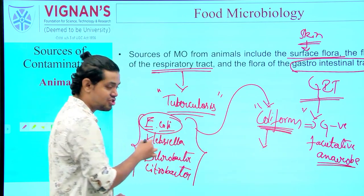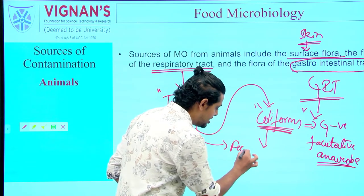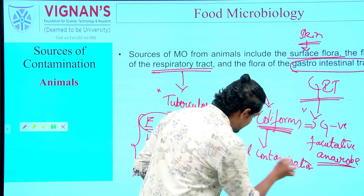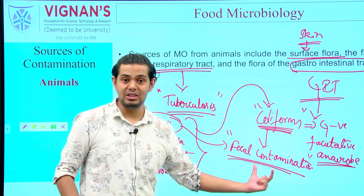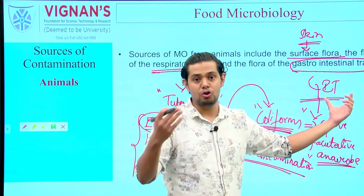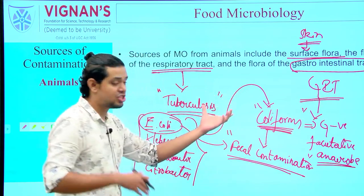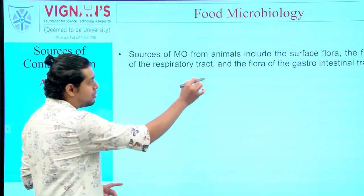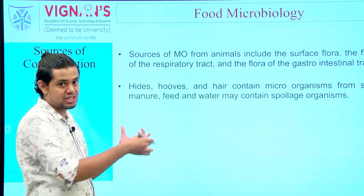Of the coliform group, the most important is Escherichia coli, because its presence in any food matrix indicates fecal contamination — meaning the product has been contaminated with feces. Besides coliforms, the GIT tract of animals may also harbor Salmonella, Shigella, and Listeria, which are potential foodborne pathogens that can cause a variety of diseases when consumed.